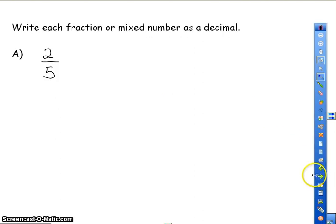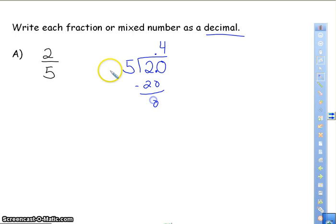So we're going to start off by writing each fraction or mixed number as a decimal. So I'm going to take 2 divided by 5. 5 does not go into 2, so I add a decimal point and a 0. 5 goes into 20 four times. So my answer is 0.4, or 4 tenths.